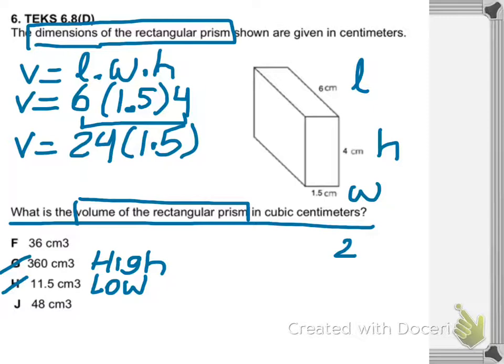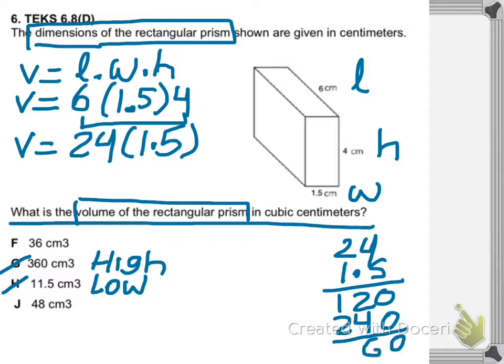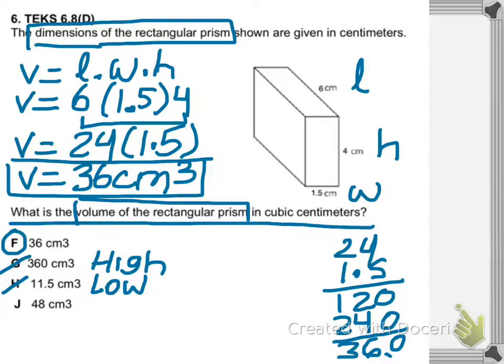You are left with thirty-six and forty-eight. One of those two choices is correct, so you do the math: twenty-four times 1.5, and you get thirty-six. The answer to this problem is thirty-six cubic centimeters.